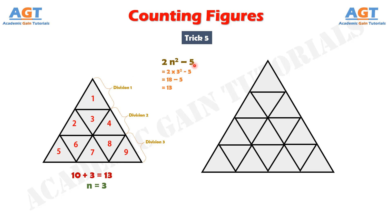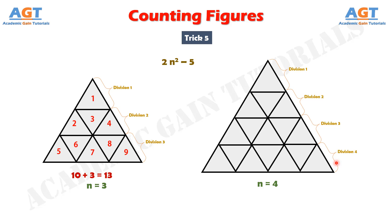Similarly, we can find the number of triangles from the second figure using the formula. Here the value of n is 4, because any one side of the outer triangle is divided into 4 parts. Putting n equal to 4 in the formula: 2 × 4² minus 5 equals 32 minus 5 equals 27. So there are 27 total triangles in this figure, simply found using this formula.